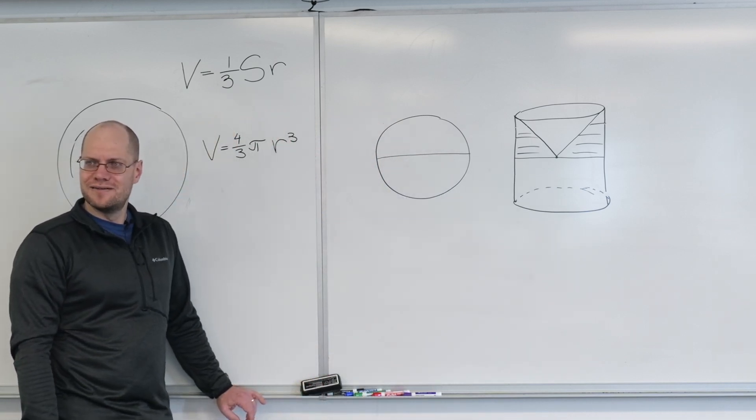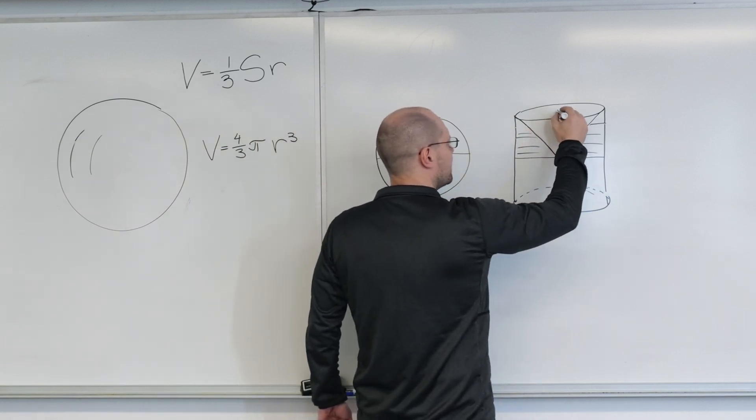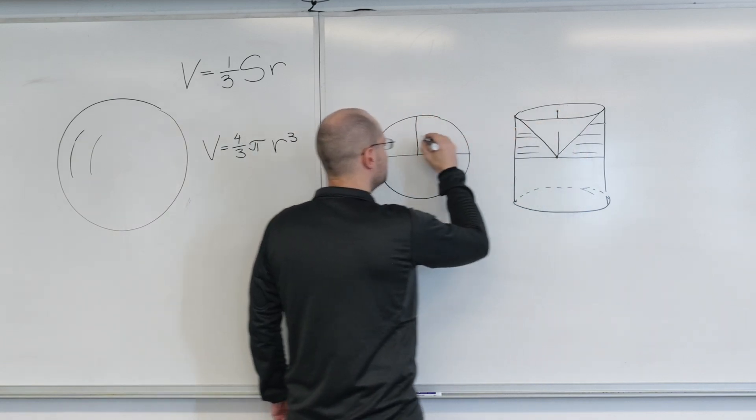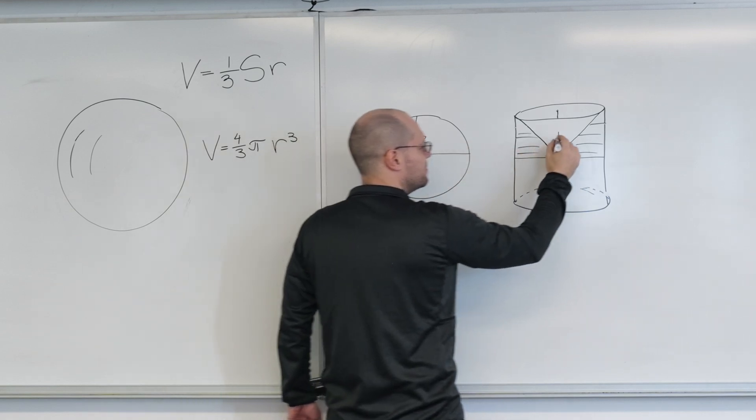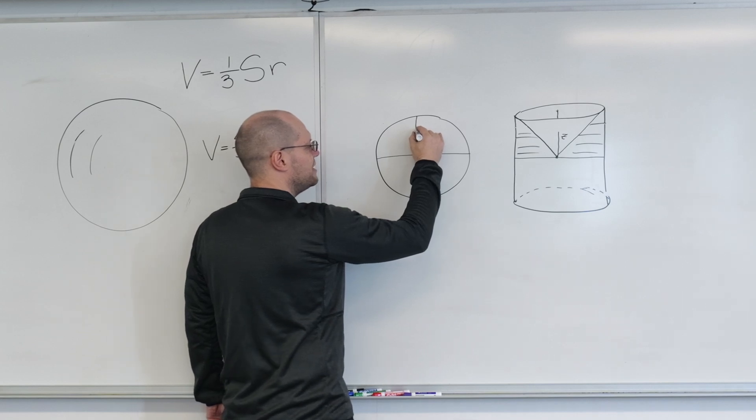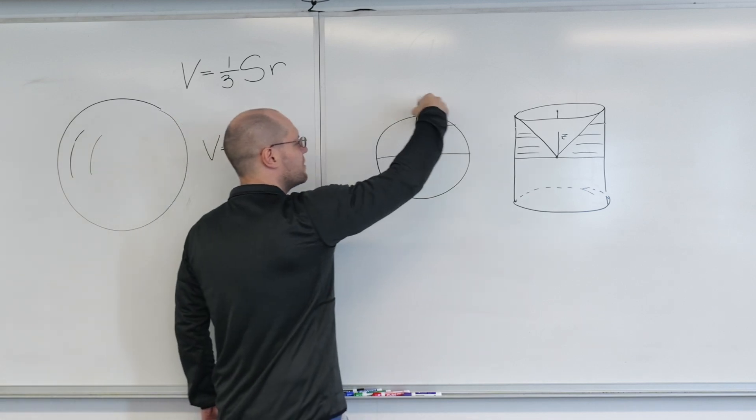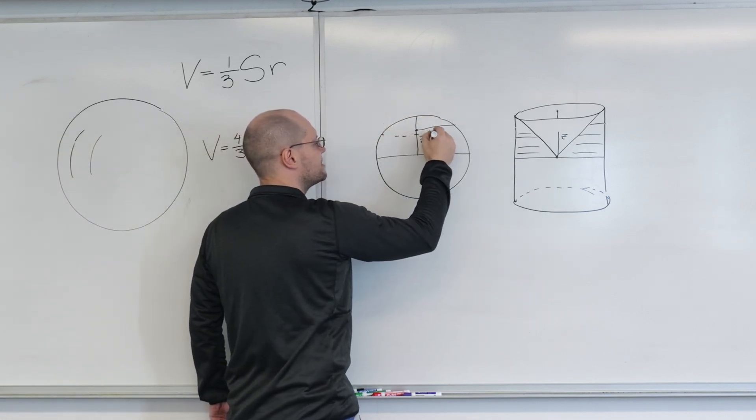It's actually not so hard to see. Draw a vertical line here and here and introduce a coordinate Z. At this value Z, what's the radius of the circle? I'm talking about the radius of this slice.